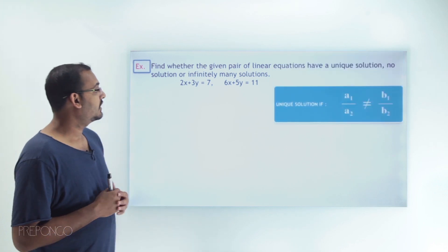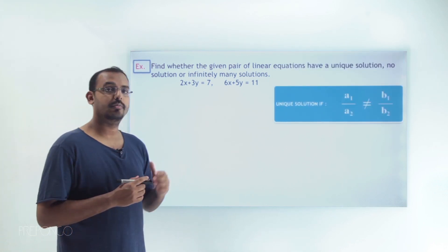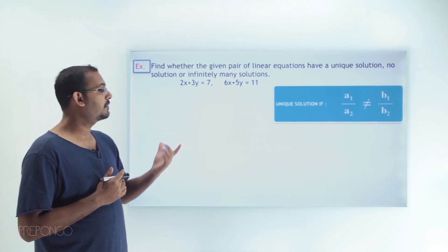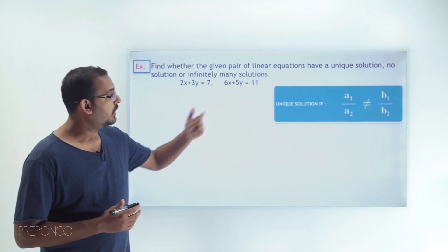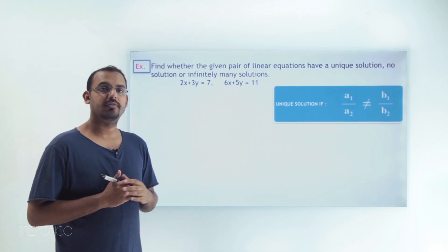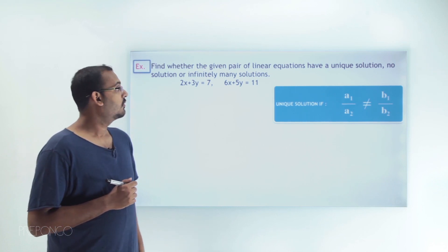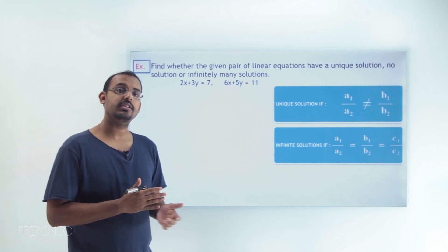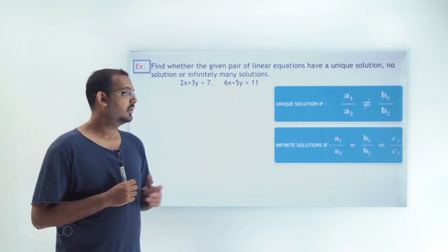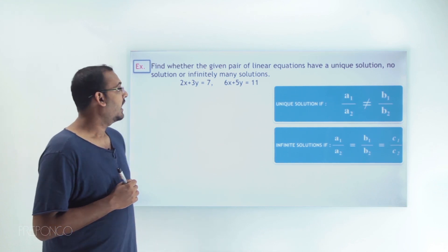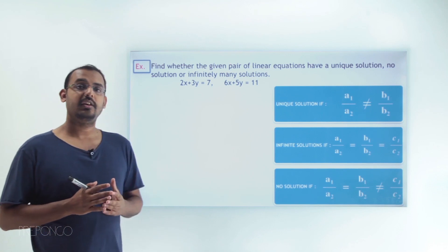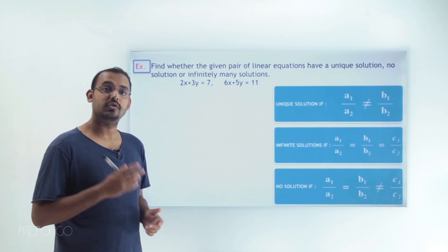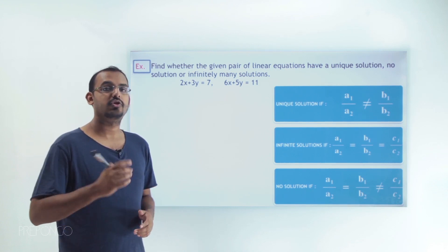We have seen three different relationships. The first one: a system of linear equations has a unique solution when a1/a2 is not equal to b1/b2. For infinitely many solutions, the condition is a1/a2 = b1/b2 = c1/c2. And for no solution, the condition a1/a2 = b1/b2 ≠ c1/c2 should be true.